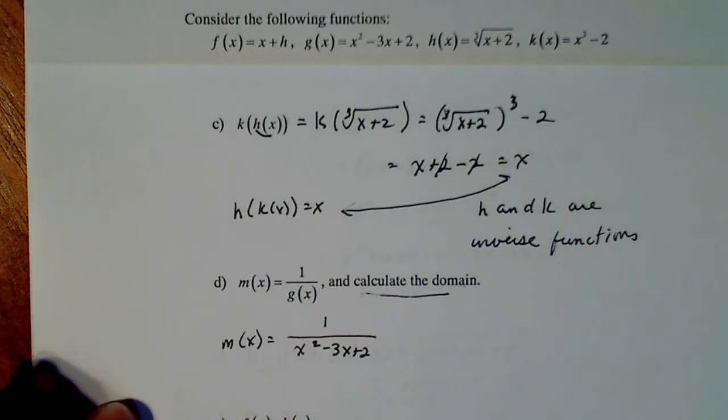Three things can affect the domain: logarithm—there's no logarithm; even-indexed radical—no even-indexed radical; or zero in the denominator. We have a denominator, so we need to consider that.